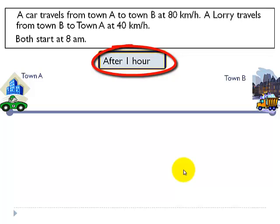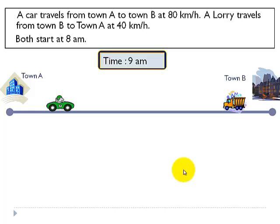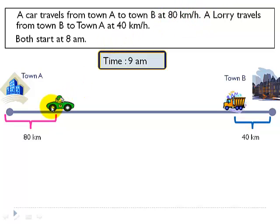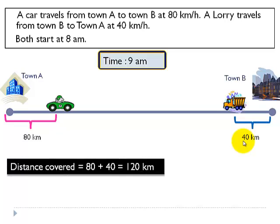After one hour, where would they be? At 9 a.m., the car would have traveled 80 kilometers, because the speed is 80 kilometers per hour — meaning in one hour the car will travel 80 kilometers. Similarly, the lorry would travel 40 kilometers in the same one hour, since both of them started at the same time. So in one hour, the total distance covered between town A and town B is 80 plus 40, which equals 120 kilometers.